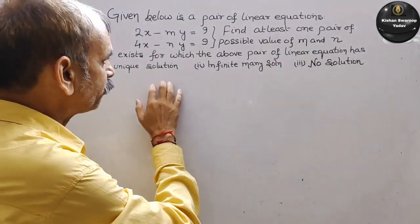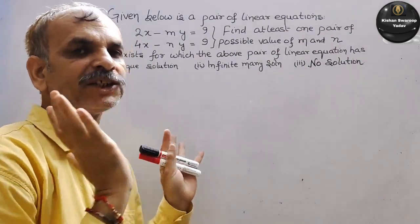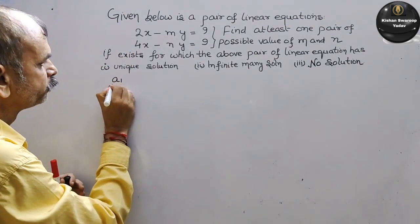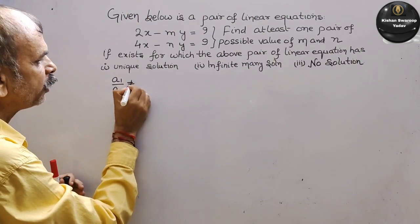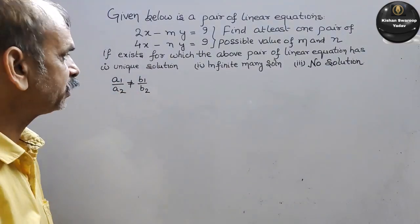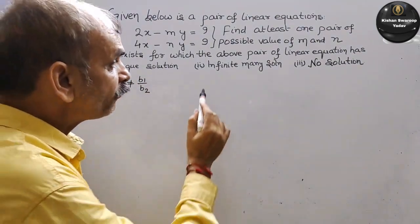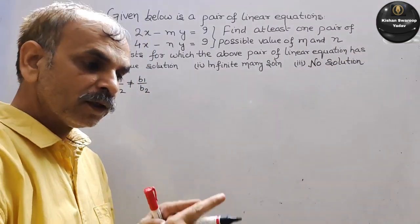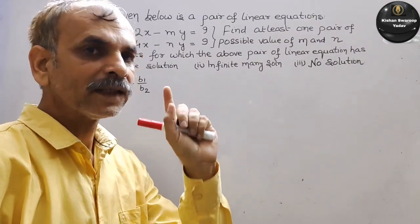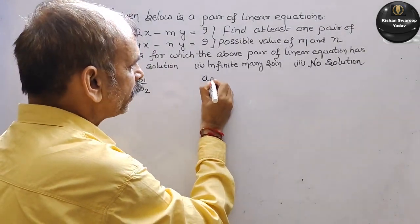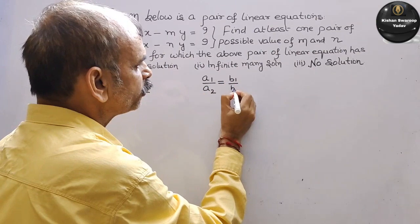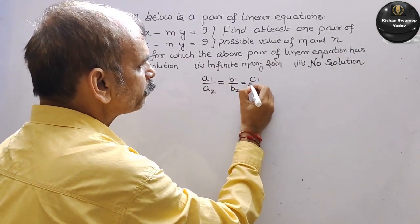तो सबसे पहले हम इनके formula लिखते हैं। क्या conditions हैं? तो इसकी condition क्या होती है? A1 by A2 is not equal to B1 by B2 — यह आपकी first condition unique solution का। Infinity-many solution किसमें होते हैं? A1 by A2 is equal to B1 by B2 is equal to C1 by C2.